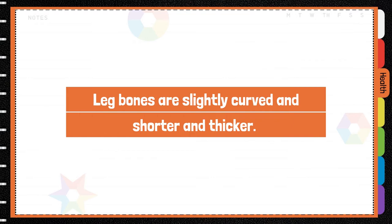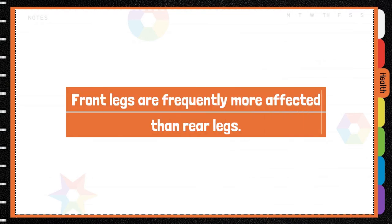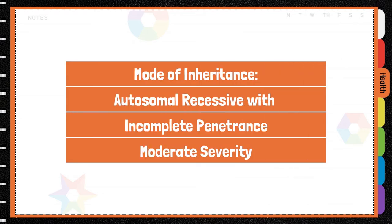The leg bones are slightly curved and shorter and thicker. The front legs are frequently more affected than the rear legs. Mode of inheritance is autosomal recessive with incomplete penetrance, which means that not all dogs with two copies of the gene will show obvious physical characteristics.